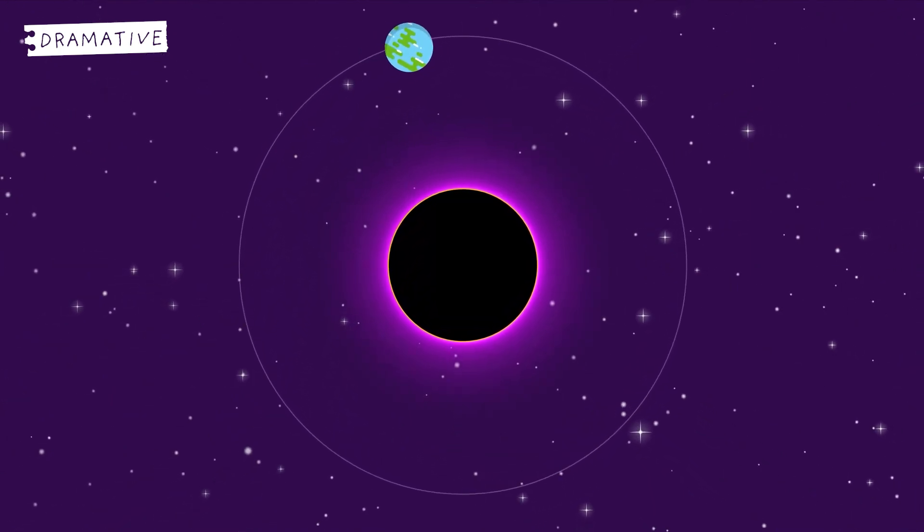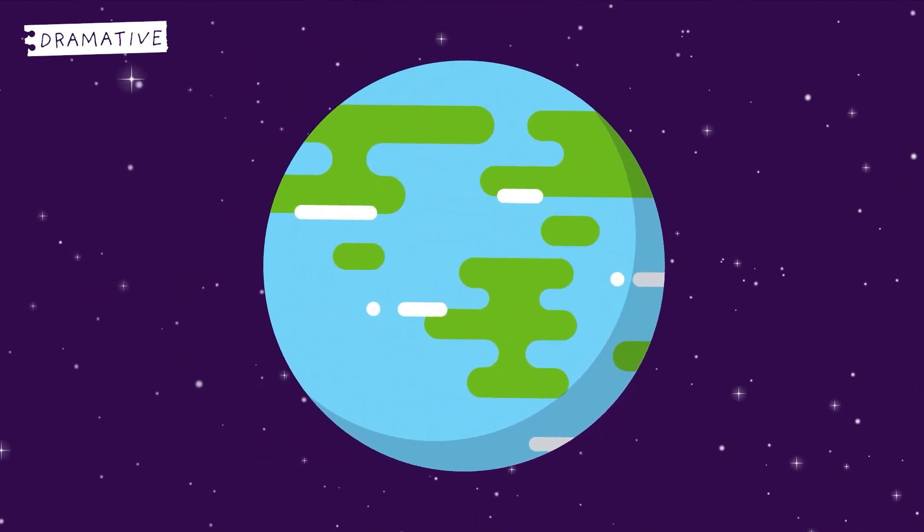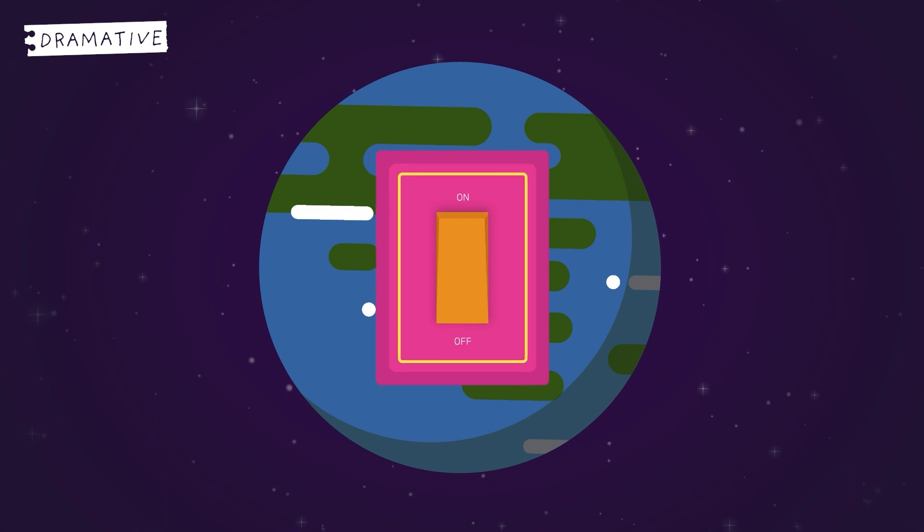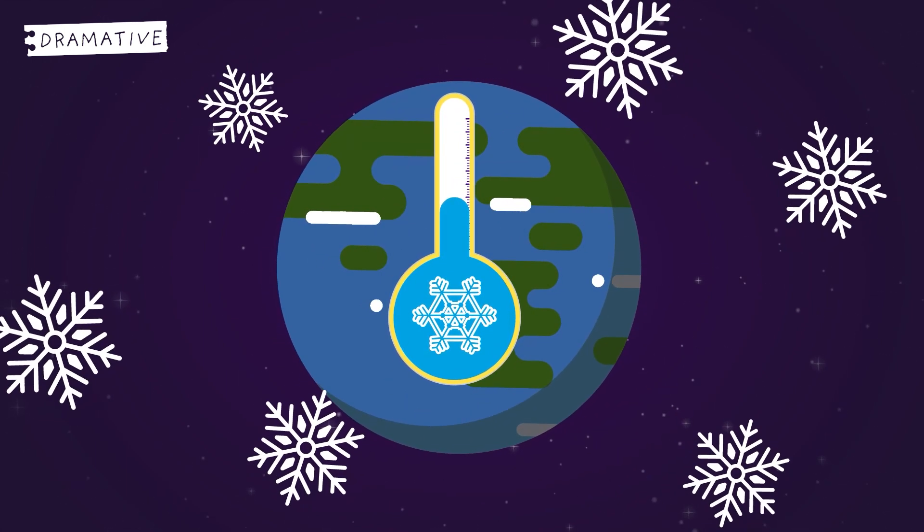We would actually continue to orbit the black hole just as we did the sun, though this would essentially be flicking off a light switch and leaving us in the cold and dark for all eternity. Life on Earth would freeze to death soon after.